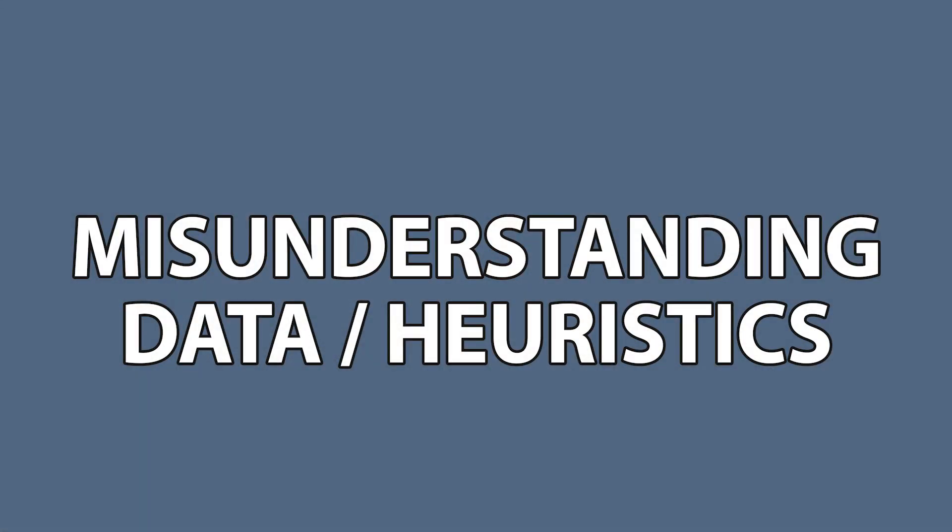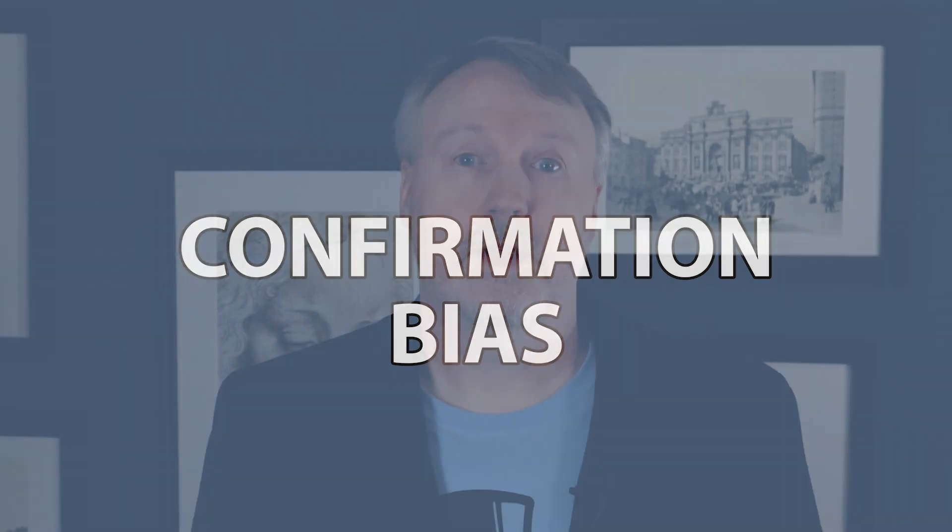You'd be surprised how often you start design thinking you know your problem space, then find that writing heuristics exploiting that knowledge leads you to do exactly the wrong thing. I can think of three reasons this happens. First, misunderstanding the data and heuristics — you have incorrect assumptions about the way your system is used and how your heuristics actually work. Two, confirmation bias — you understand a small part of your system but treat it like the majority because you remember observations that support your assumption.